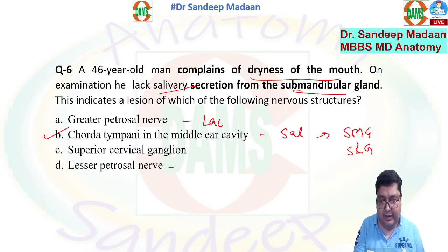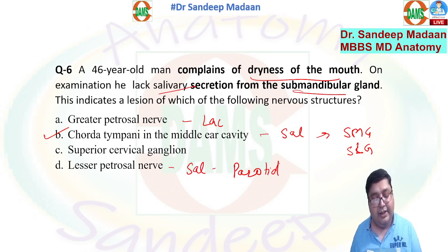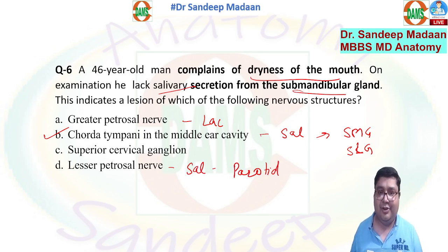The lesser petrosal nerve is also for salivation but from the parotid gland. The superior salivary cervical ganglion is sympathetic, not parasympathetic.